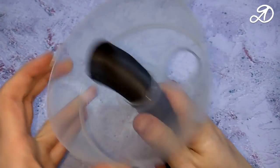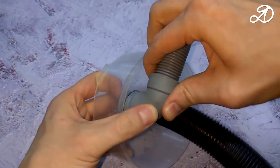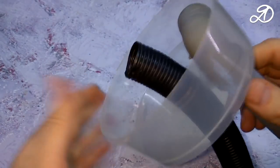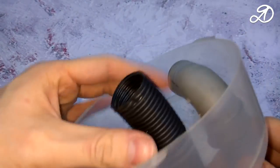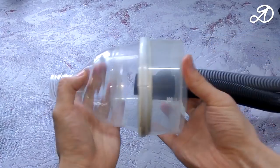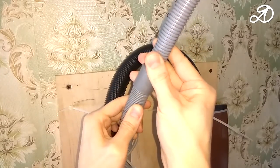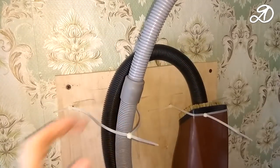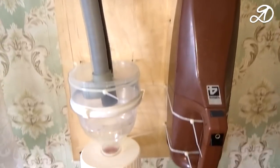This hose I found in the workshop, and it is ideally suited to the vacuum cleaner. It turned out compact. I connect a long hose, also from the washer. And now tests.